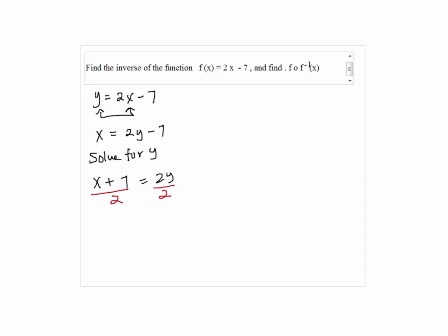And then divide both sides by 2. We have y equals x plus 7 over 2. So the answer is f inverse of x equals x plus 7 over 2.